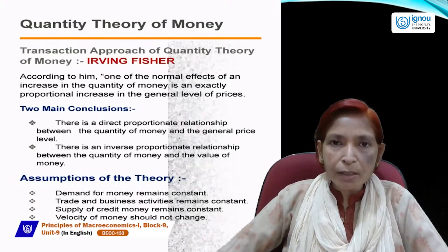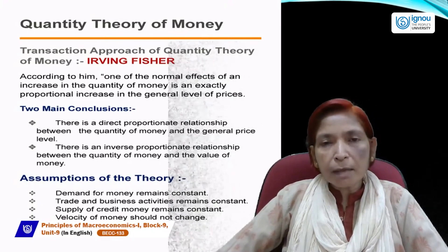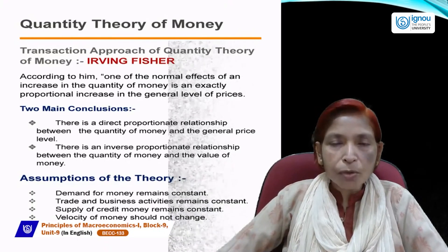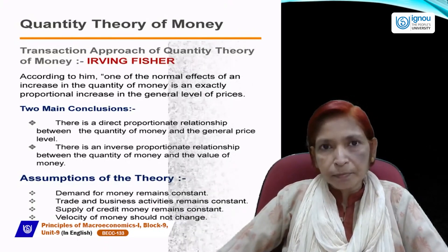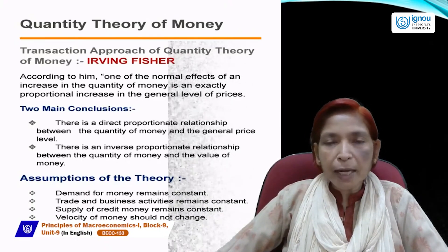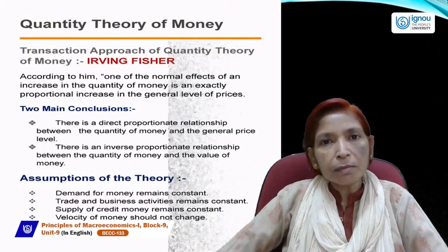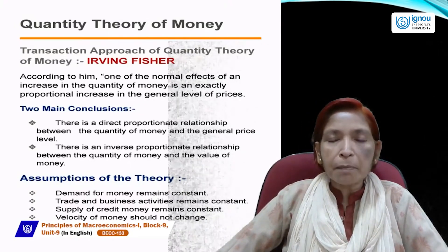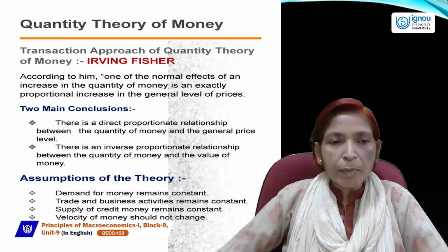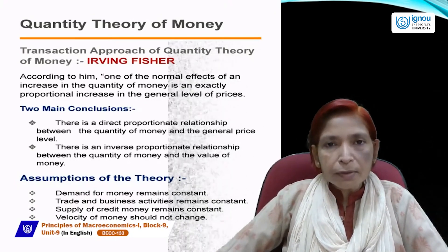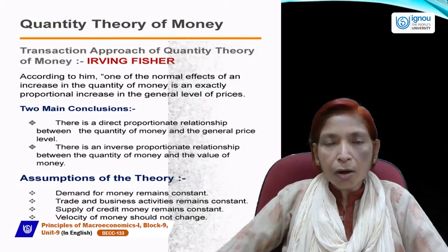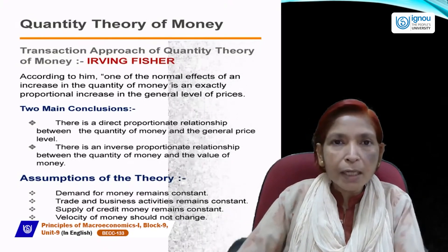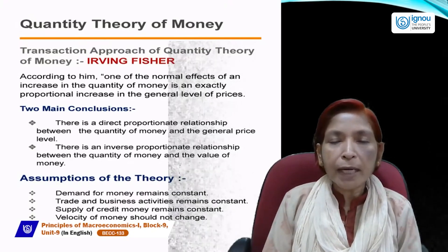According to Irving Fisher, whenever money supply increases, price level will also increase by the same ratio or proportionately. If money supply doubles, then price level will also double. If money supply is halved, price level will be half. There is a positive, direct, and proportionate relationship between quantity of money and general price level.